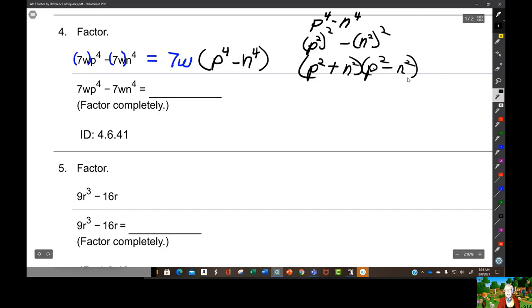Because this now is the difference of two squares. So this factors like this: p and p, and n and n, plus and minus. So pull this down. This doesn't factor because it's a plus.